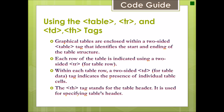Using the table tag, inside the table we have tr, td, and th tags. Tables are enclosed within a two-sided table tag that identifies the start and end of the table structure. Each row of the table is indicated using the two-sided tr (table row) tag. Within each table row are two-sided td tags for table data. The th tag stands for table header and is used to specify the table's header.